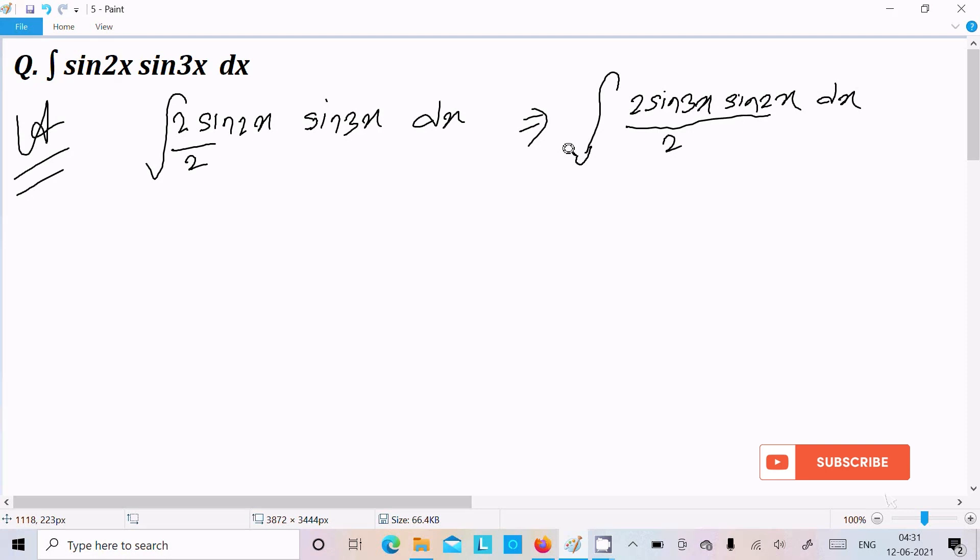So here we need to use the formula 2 sin a into sin b. So here 2 sin a into sin b, that is cos(a minus b) minus cos(a plus b).